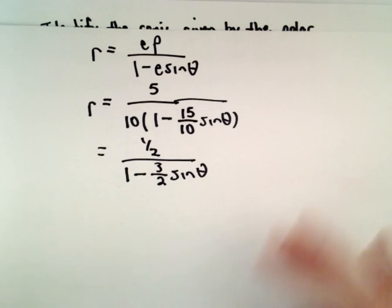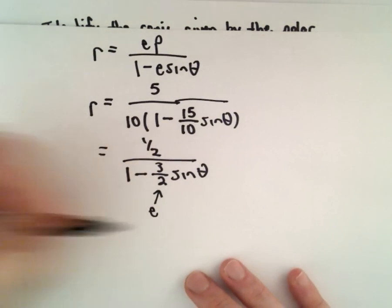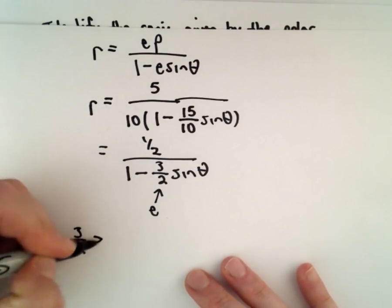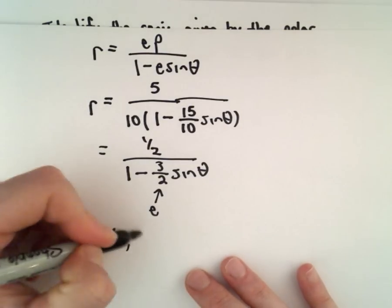So already we get that our eccentricity is going to equal 3 halves, and since that's greater than 1, we know that we have a hyperbola.